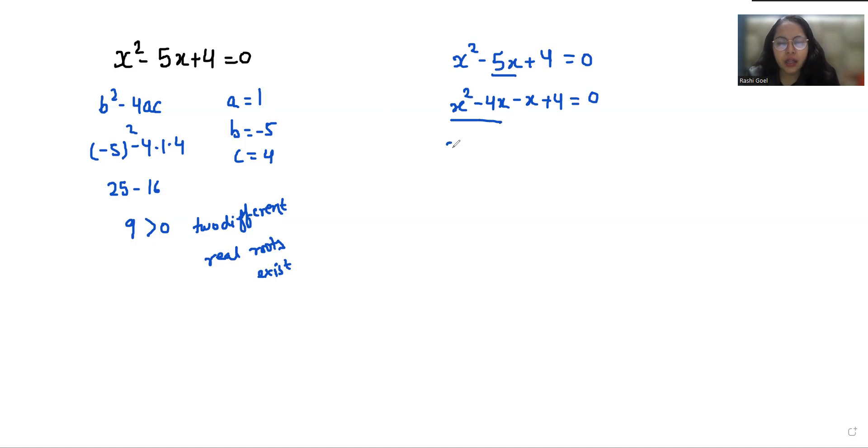Now I can take x as common. So x minus 4 is left and if I'll take negative 1 as common, so x minus 4 equals 0. Now if x minus 4 is common, so x minus 1.